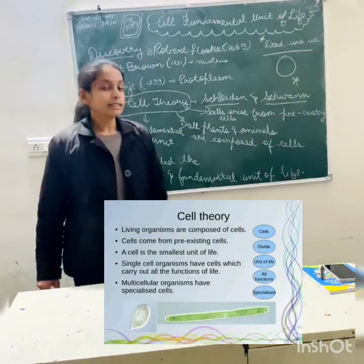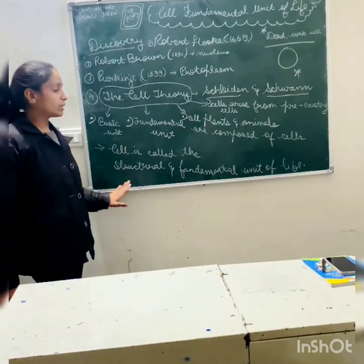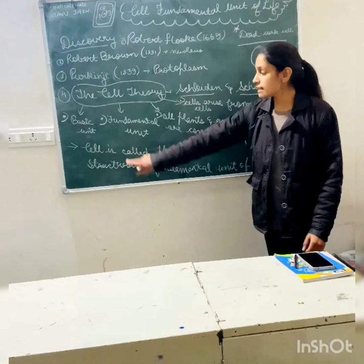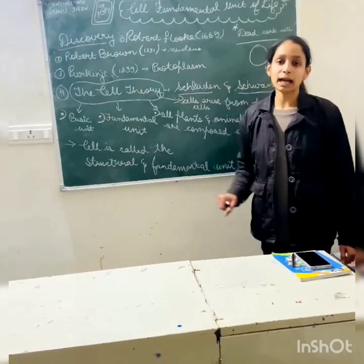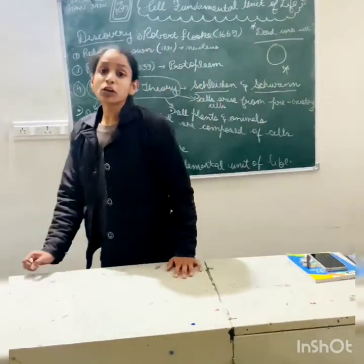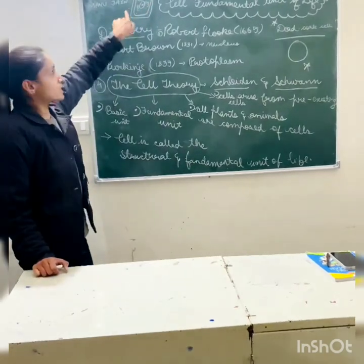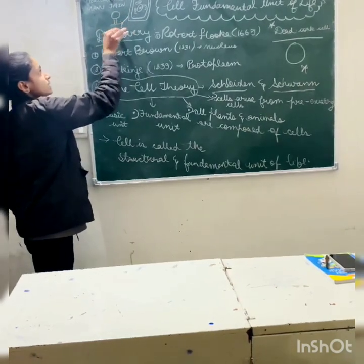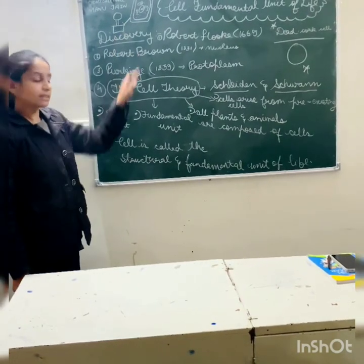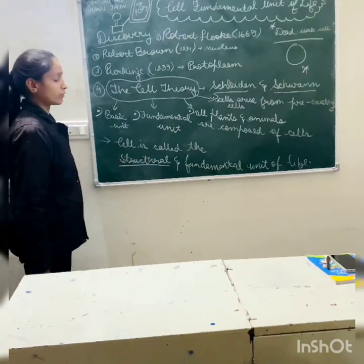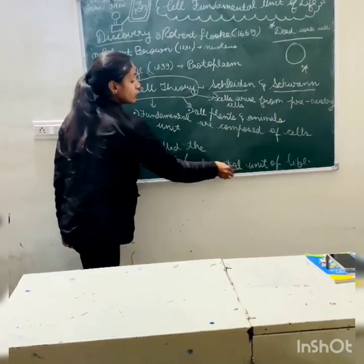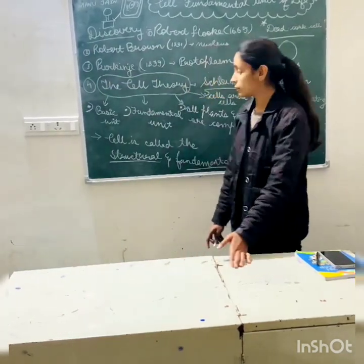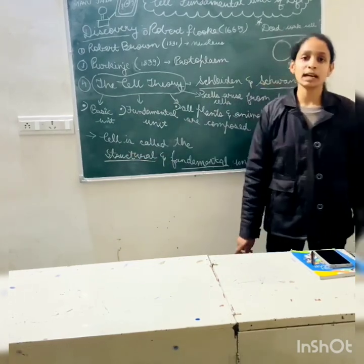So at last, we can conclude that the cell is called the structural and fundamental unit of life. The question arises: why is the cell called the structural and fundamental unit of life? Because our body is composed of cells, our body gets the proper structure. That is the reason the cell is called the structural unit of life. And it is the functional unit of life because all the functions which our body performs are done by different kinds of cells.